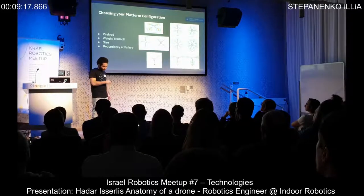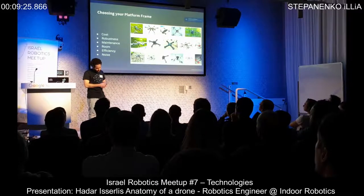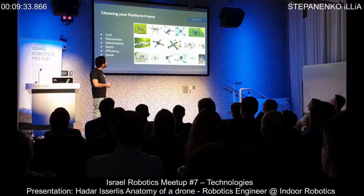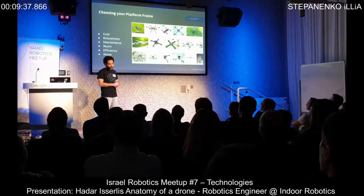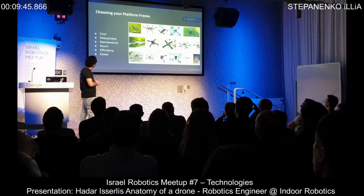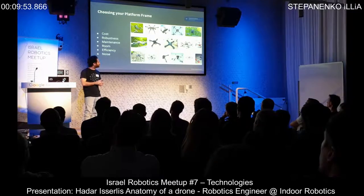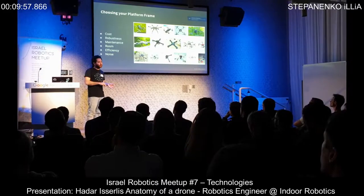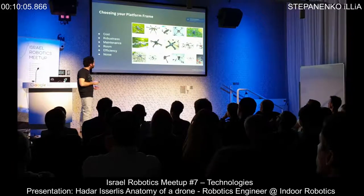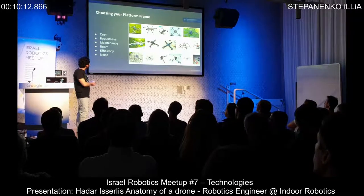The next step is selecting our frame. Here we also have several parameters to consider: cost, budget, and robustness — remember, we will crash during testing and development. We also want to think about maintenance: as developers we'll want to take it apart, add and remove components, connect things again, and leave room for electronics, small sensors, etc., as we make it autonomous.